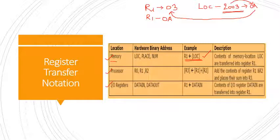For memory, we write R1 ← [LOC] specifying the memory location. If the operation is in the processor, we write R3 ← R1 + R2, which means add the content of registers R1 and R2 and place the result in R3. R1, R2, and R3 are registers in the processor. R1 and R2 each hold some data, this instruction adds their contents, and the result is stored in register R3.